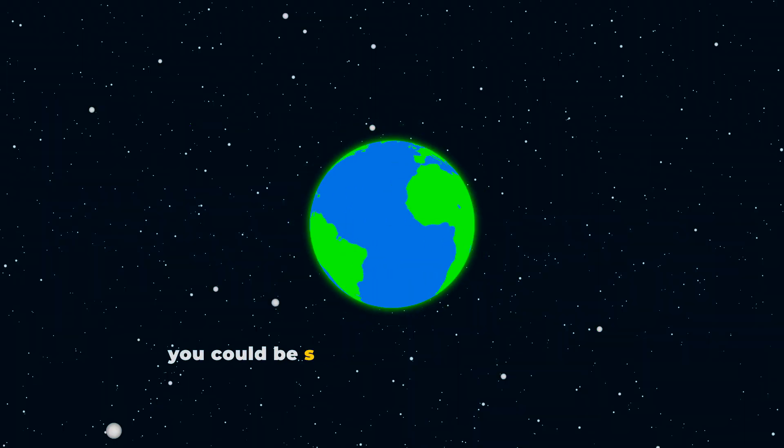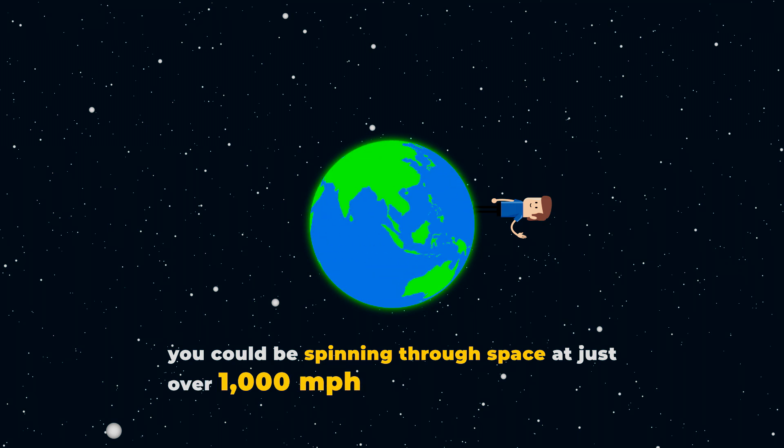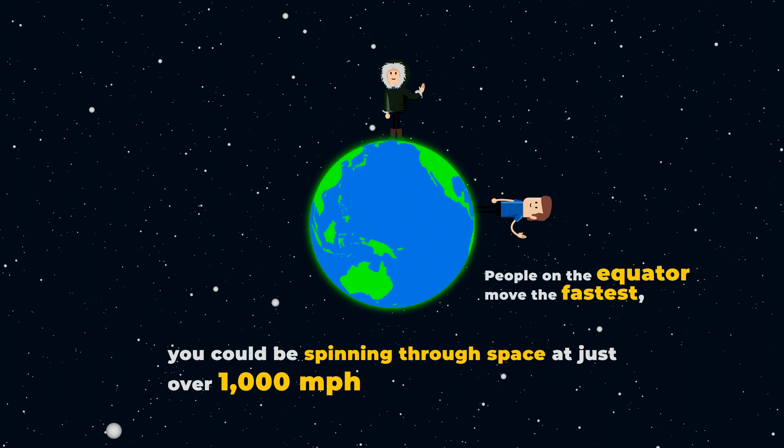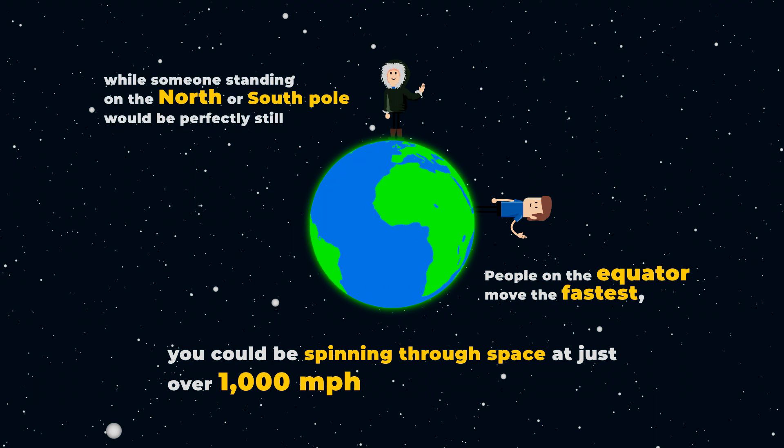You are spinning through space at just over 1,000 miles per hour. Yes, as the Earth rotates on its own axis, people on the equator move the fastest, while someone standing on the North or South Pole move the slowest.